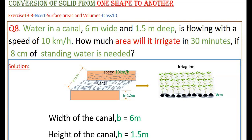Hello everyone. Today I am going to tell the solution of problem 8 from exercise 13.3 from NCERT, from Surface Areas and Volumes, class 10. Water in a canal 6 meters wide and 1.5 meters deep is flowing with a speed of 10 kilometers per hour. How much area will it irrigate in 30 minutes if 8 centimeters of standing water is needed?